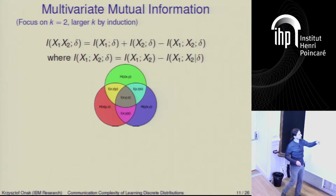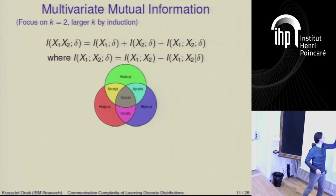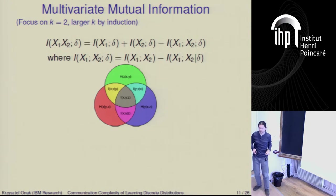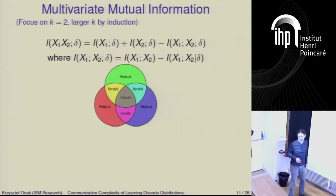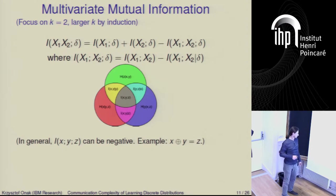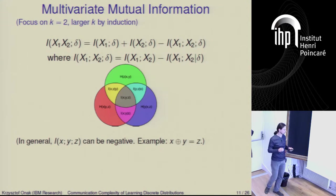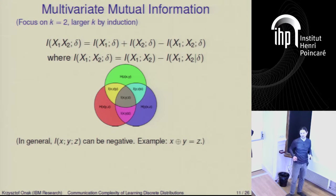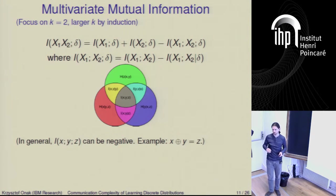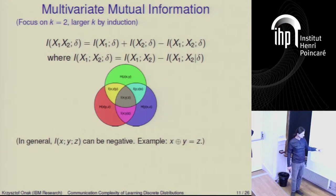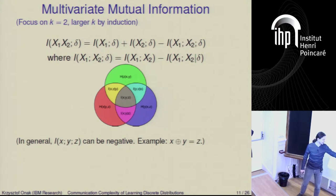We would like to show this three-way mutual information is non-negative, because this proves what we need. The problem is that in general this quantity can be negative. Unlike standard mutual information between two variables, which is always non-negative, higher-order generalizations can become negative. One example: if X, Y, Z are such that Z equals the parity of X and Y, then the mutual information between Z and X is zero, and between Z and Y is zero, but the three-way term contributes negative one.